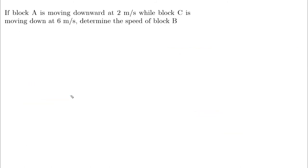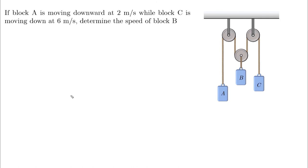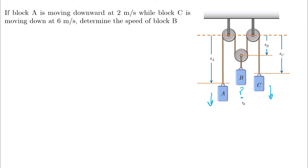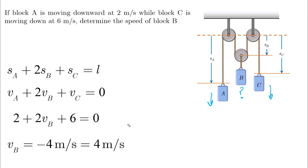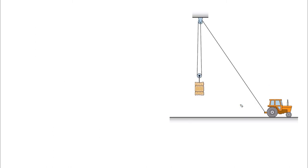Quick example: block A moves downward at 2 m/s and block C moves down at 6 m/s; find the speed of block B. Specify positive coordinates for A, B, and C. With one cable: sA plus 2sB plus sC equals L. Taking the derivative and substituting the values (both positive because downward), we get vB equals −4 m/s, meaning 4 m/s upward, since negative means opposite to the assumed positive downward direction.